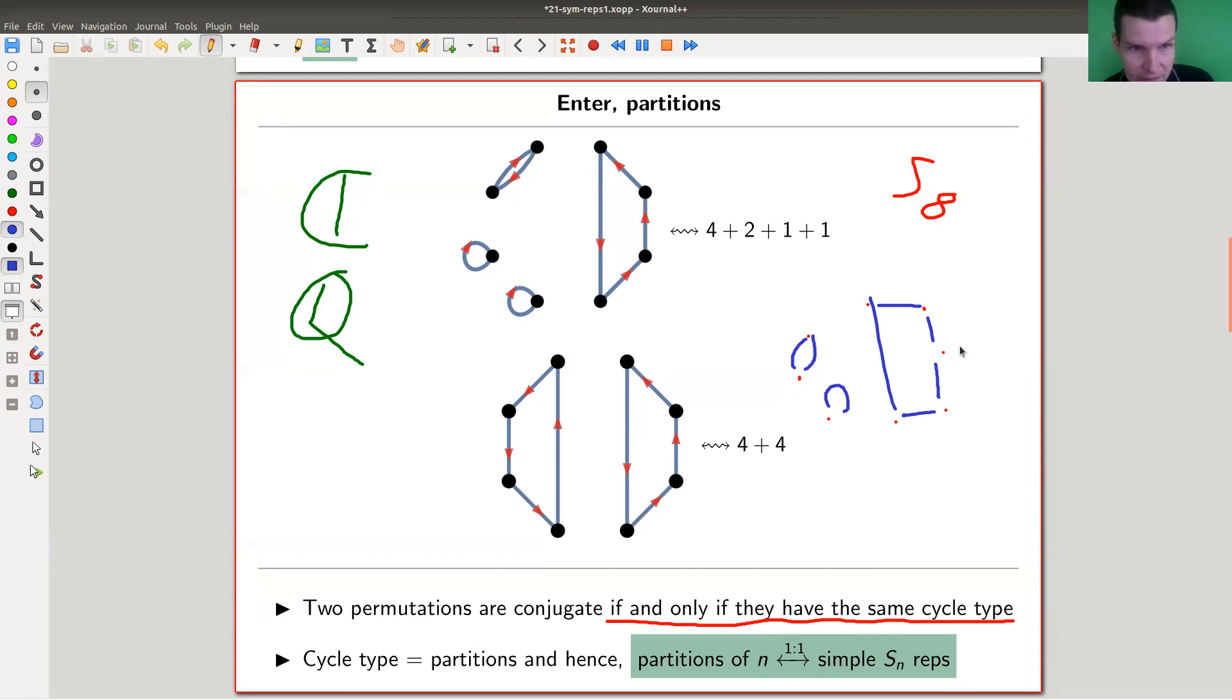So it would be here of cycle type. What is this? Five, two, one. This is four, two, one, one. So here's four, two, one, one. This is four and four. And this just means, for example, four and four. An example would be one, two, three, four, or four and four, and then five, six, seven, eight.